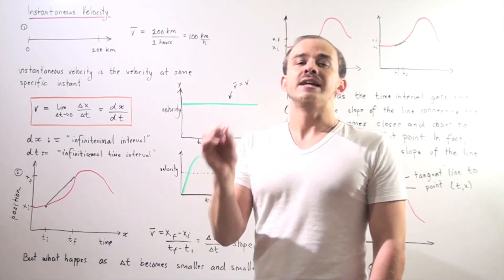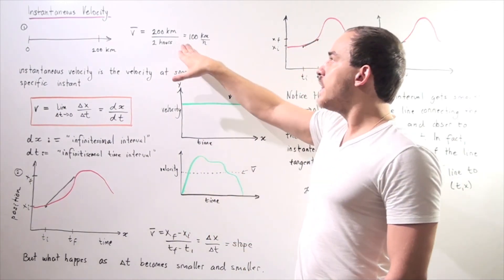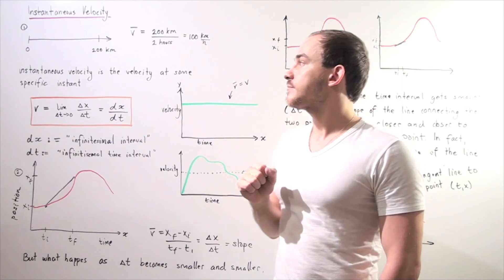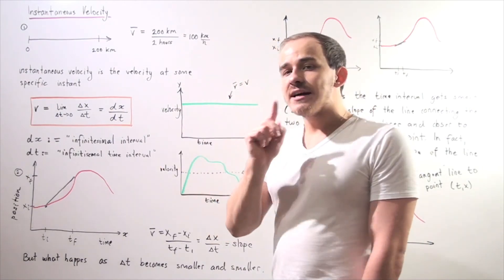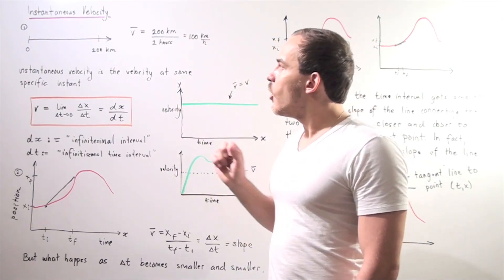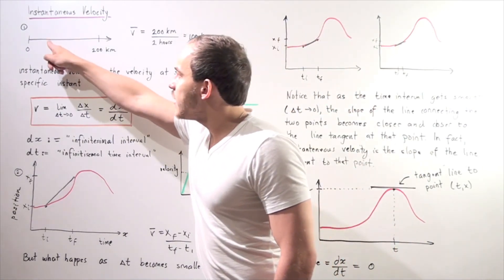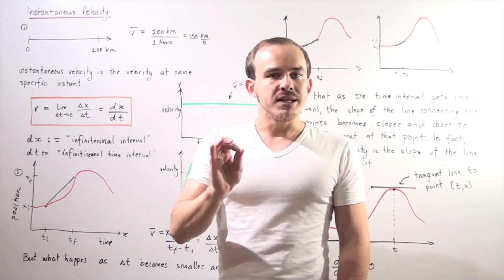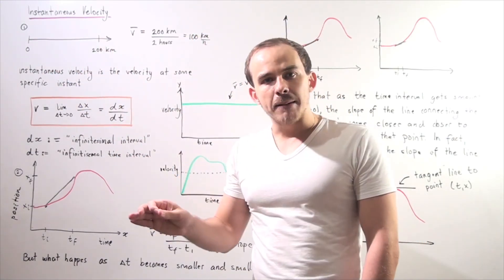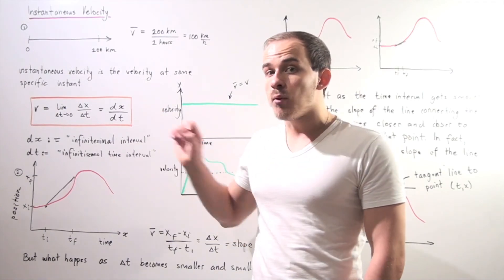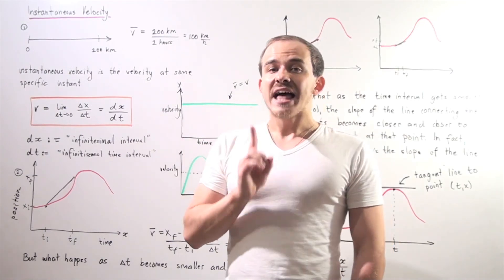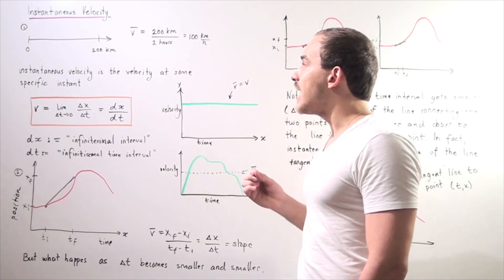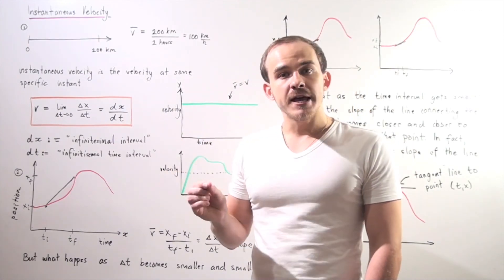That means that on average we are moving at this velocity, at this speed. Now, what if I told you that at some given moment — let's say at this moment — I stopped to get some coffee? That means if I stopped, my actual velocity at that point was zero. So that means that velocity and my average velocity are not the same thing.